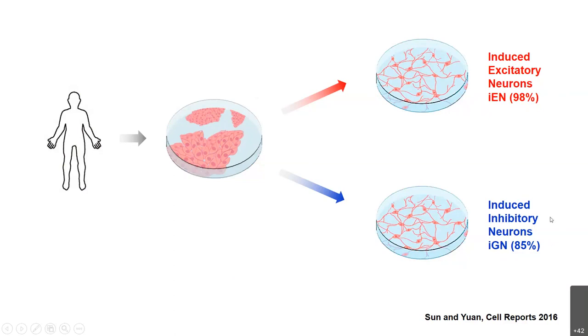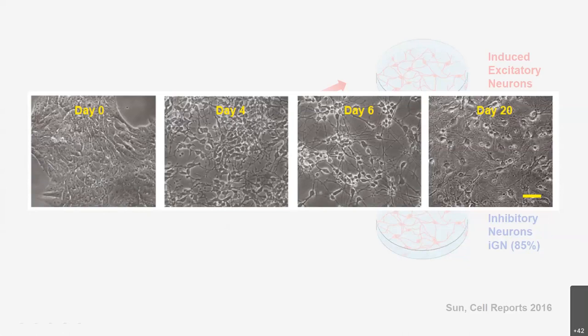Just to give you a quick overview of how robust this system is and how fast the neurons are generated: within days — probably within a week — you will see the cells burst out from the compact ESC morphology and take on the shape of a neuron. By day 20, you have really elaborate neurites and the cells are very mature. Armed with this novel direct conversion method, we realized we can really utilize such protocols to get functional human neurons and study if there are any functional phenotypes.